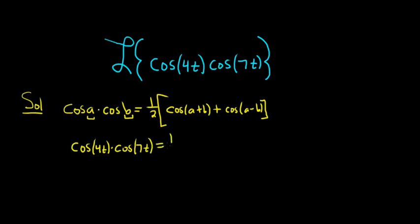That's equal to 1 half. We have our bracket. Then it's cosine of a plus b. So cosine of, we're adding these, right? 4t plus 7t is simply 11t.